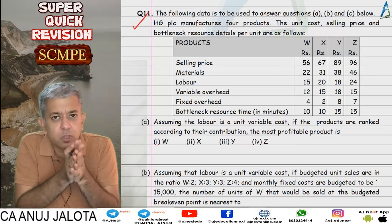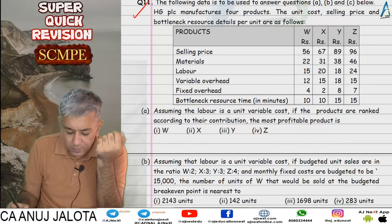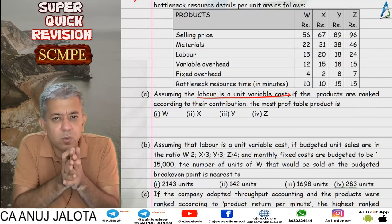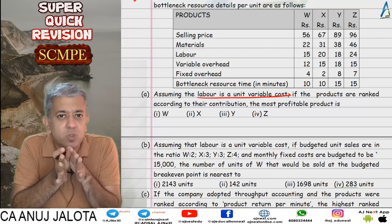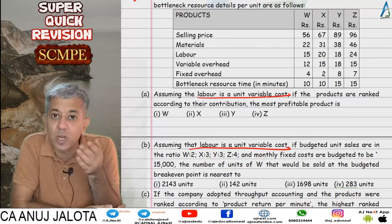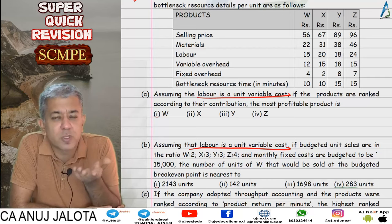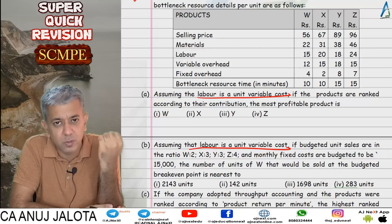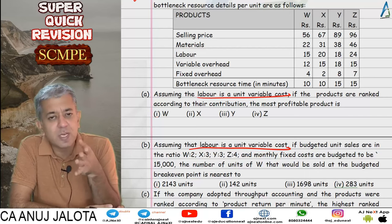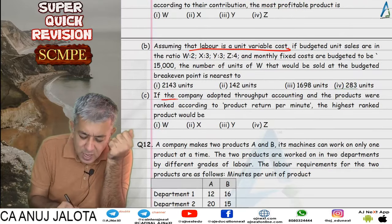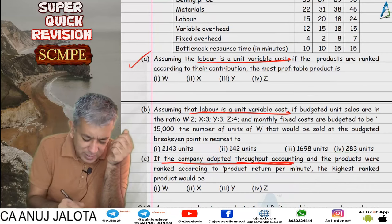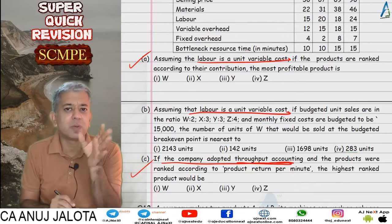Question 11 was a relatively simple MCQ-type question. Important point: Part A stated assume labor is a unit variable cost — so do NOT apply TOC here, because in TOC every cost except material is fixed. Part B also assumed labor as variable cost and asked for break-even point. Break-even point formula is fixed cost divided by contribution per unit. For more than one product, contribution per unit becomes weighted average contribution per unit, with weights as sales mix in units.